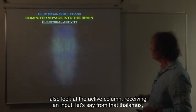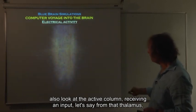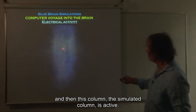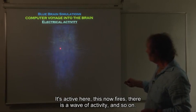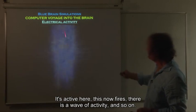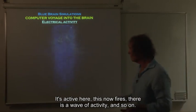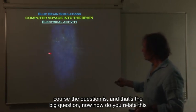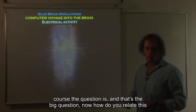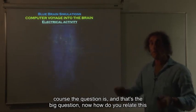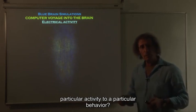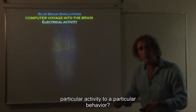So there are some waves of activity following a particular input. You can also look at the active column receiving an input, let's say from the thalamus. And then this column, the simulated column is active. It's active here. This now fires. There is a wave of activity and so on. So you can really get a very, very beautiful simulated activity. And of course the question is, and that's the big question, now how do you relate this particular activity to a particular behavior?